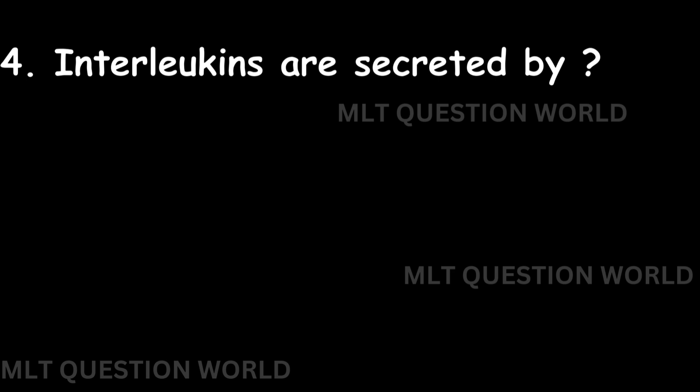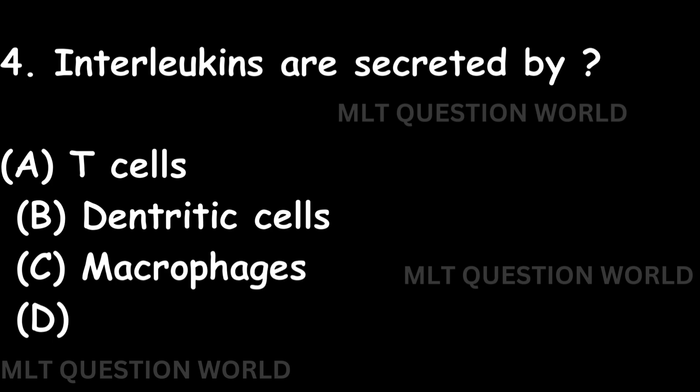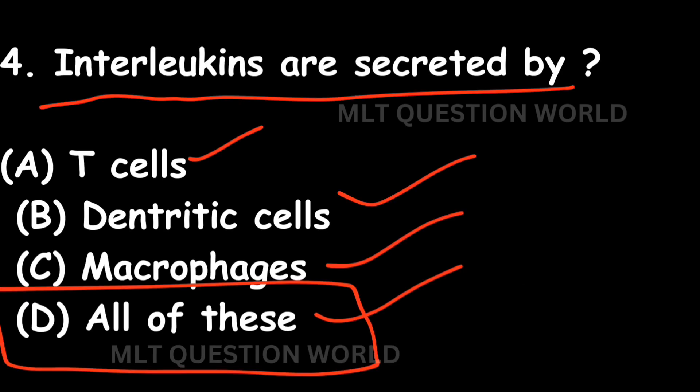Next question: Interleukins are secreted by — Option A: T cells. Option B: Dendritic cells. Option C: Macrophages. Option D: All of these. Interleukins are secreted by T cells, dendritic cells, and macrophages, so the right answer is Option D: All of these.